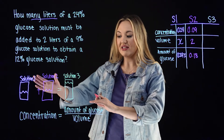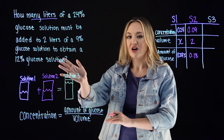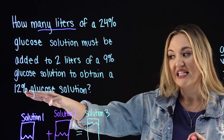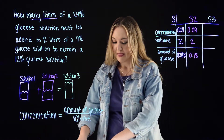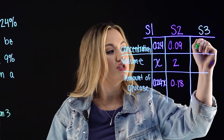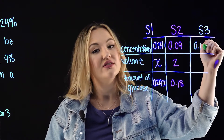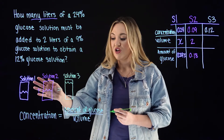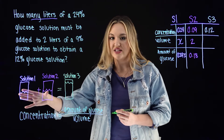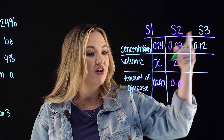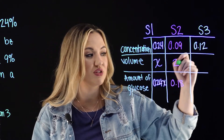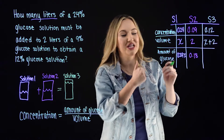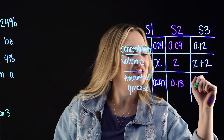For the mixture, solution one plus solution two equals solution three. The stem tells us the mixture is a 12% glucose solution, so the concentration is 0.12. If you pour solution one into solution two, the combined volume is x plus 2. And the amount of glucose in the mixture is concentration times volume: 0.12 times (x + 2).